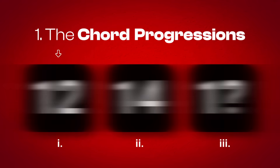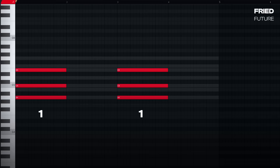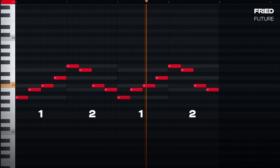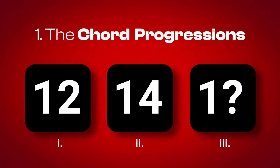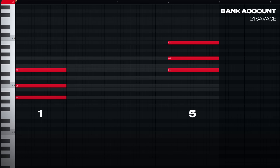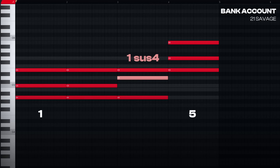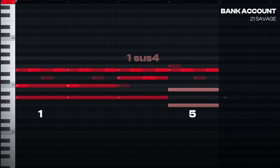Take for example number 1, which uses chords 1-2. Here's how they were used in Fright by Future — it's basically an up and down arpeggio that uses some extra notes from the scale as passing tones. Or see how number 3 was used in Bank Account by 21 Savage, which is chords 1-5. For this one, they extended the 1 chord to be 3 beats long and used what's called a sus4 chord, which means moving the middle note 1 scale note up, increasing its tension. Beyond that, the shape was applied as usual.